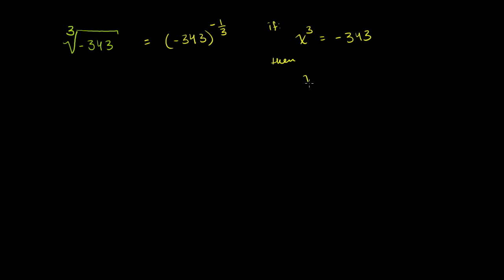then x is equal to the cube root of negative 343. So these are all ways of viewing it. This is essentially saying there's some number, when I multiply it by itself three times, I should get negative 343. So let's figure out what this number is.